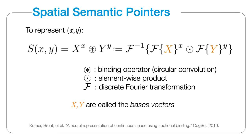In SPA, an integer can be represented by repeatedly binding a vector of itself. This idea is generalized for representing real numbers by fractional binding. You can represent two continuous variables, like an xy position in space, by binding the representation of each dimension together. This is called a spatial semantic pointer. The capital X and Y vectors here are called the basis vectors, and are typically set as random vectors.